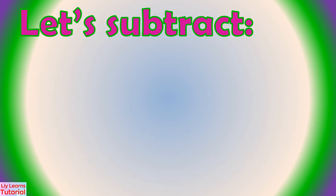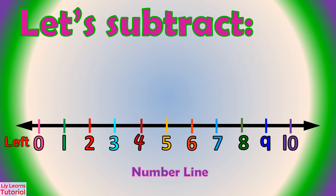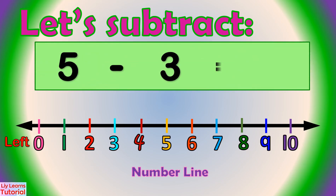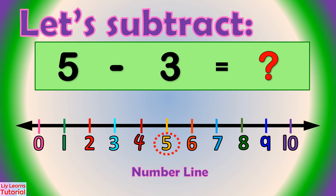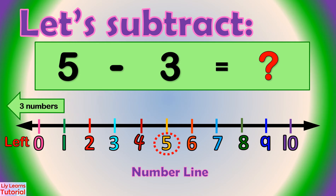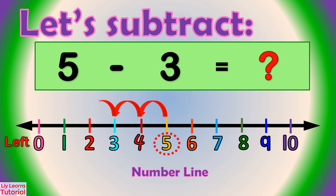We can carry out subtraction using a number line. To find the difference of 5 minus 3, we mark the minuend, which is 5, on the number line. And move 3 numbers to the left: 1, 2, 3.